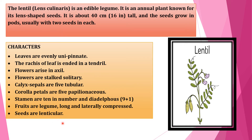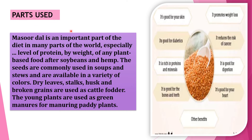These are the important characters of the Masur plant. Now, parts used — what are the important parts of the Masur plant that are used for our benefits. Masur dal is an important part of the diet in many parts of the world, with especially high levels of protein by weight of any plant-based food after soybeans and hemp. The seeds are commonly used in soups and stews and are available in a variety of colors. Masur dal is considered one of the non-veg dals, and there is a comparison between Masur dal and onion.